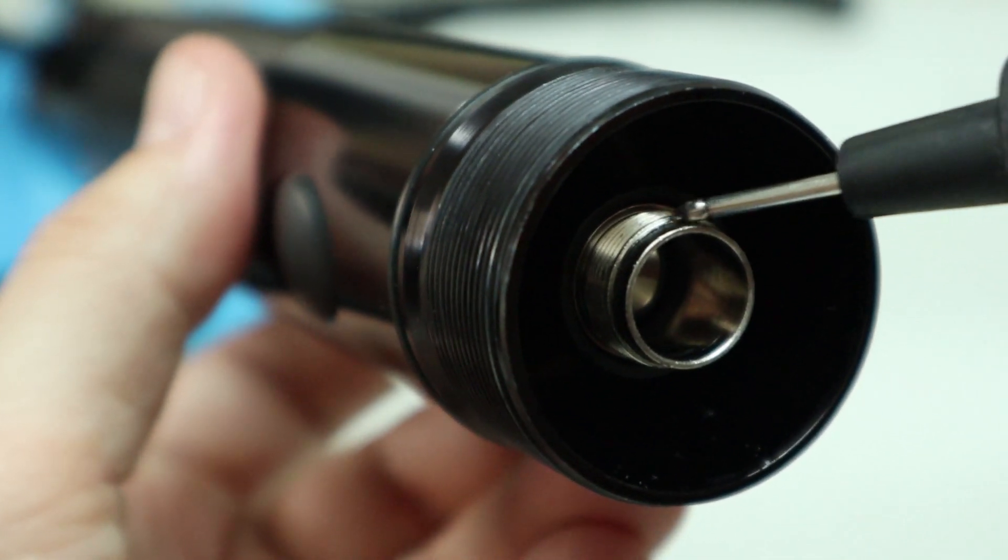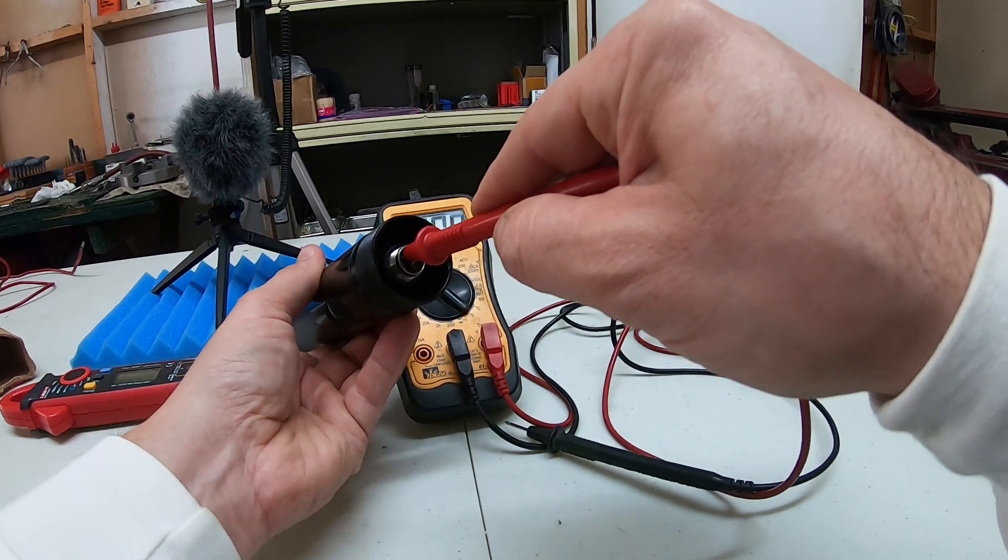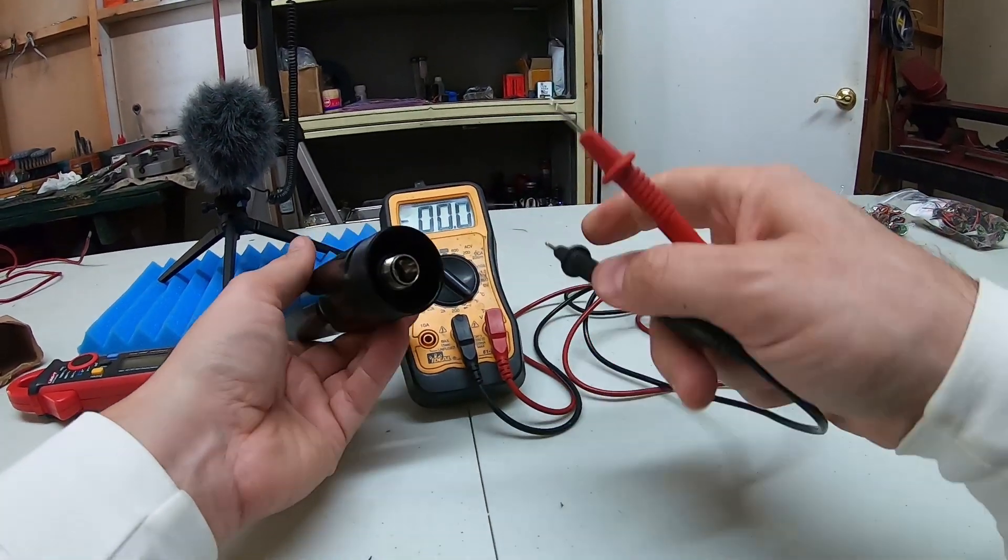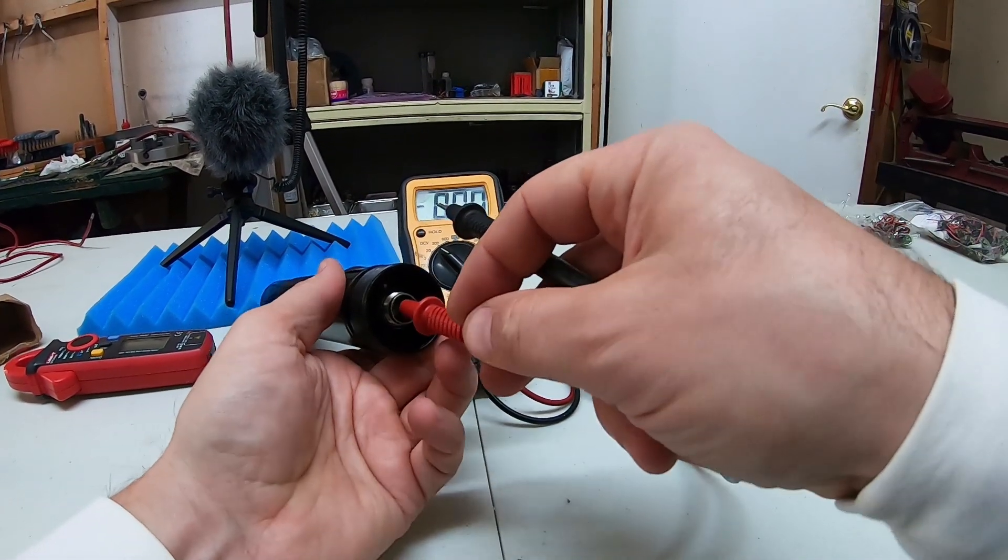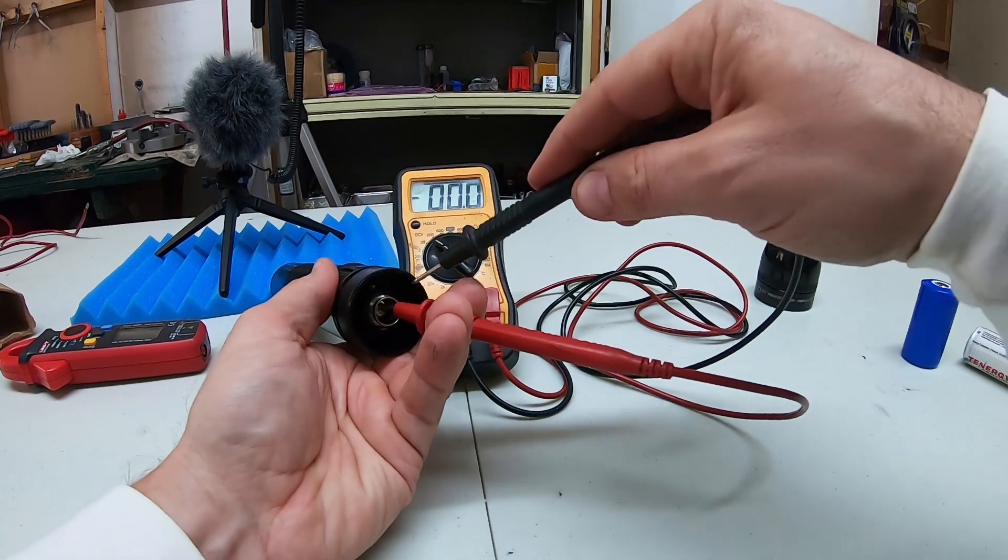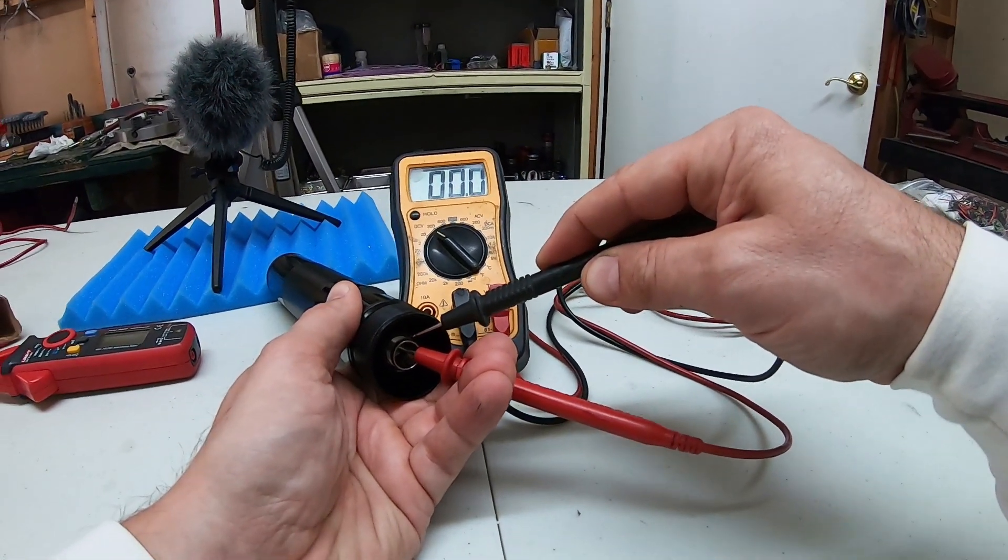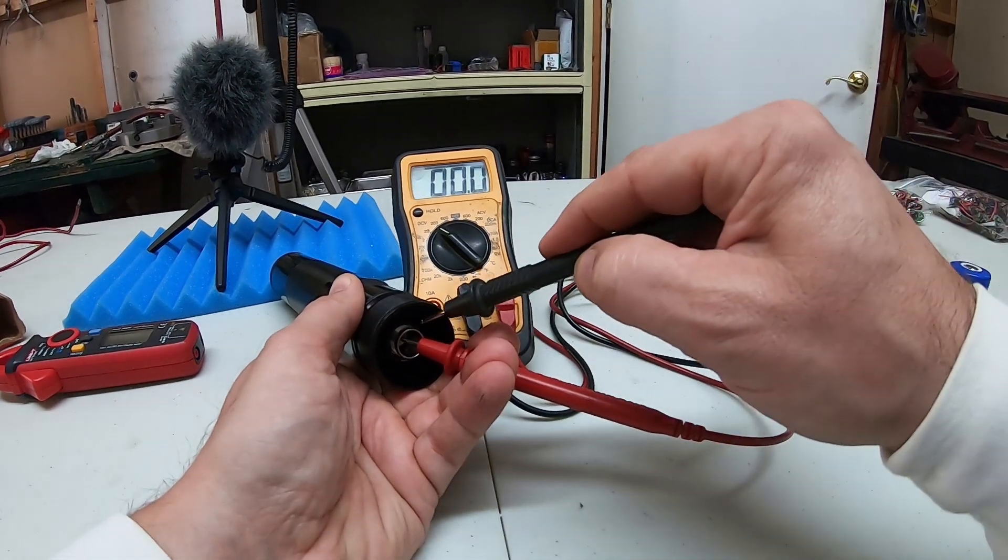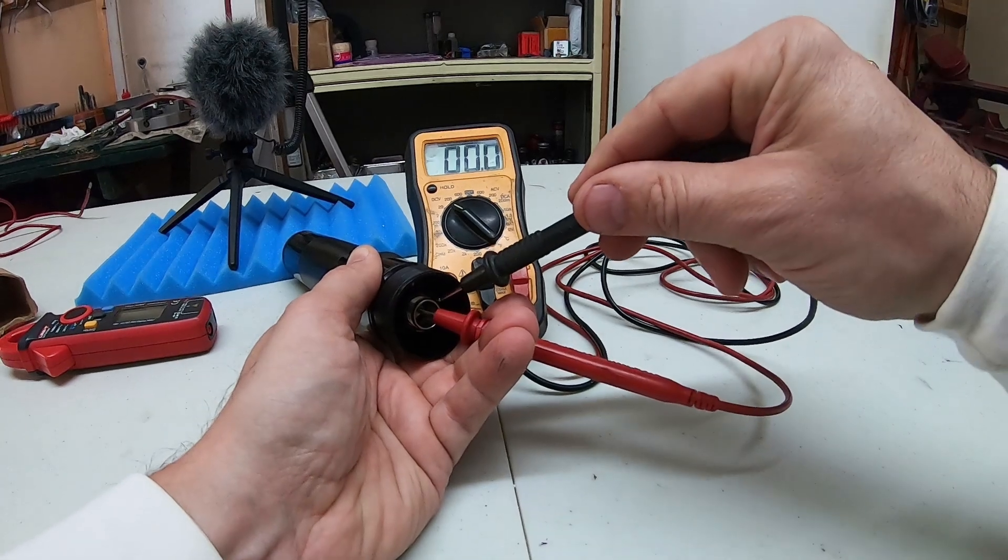So we can stick this lead in here in the middle and push down on that, and then with our switch on of course, we can stick this in there and touch this to the outside, and we're getting zero volts. With the switch in any position we've got nothing.